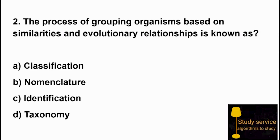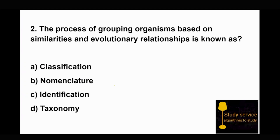Question 2: The process of grouping organisms based on similarities and evolutionary relationships is known as. Option A: classification. Option B: nomenclature. Option C: identification. Option D: taxonomy. The right answer is Option D — taxonomy.